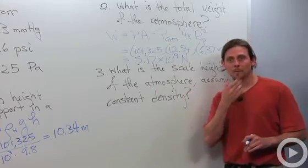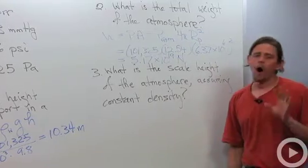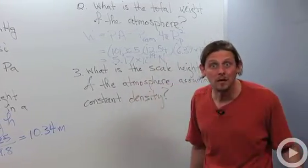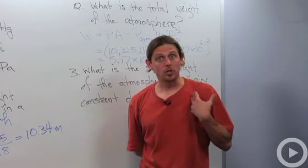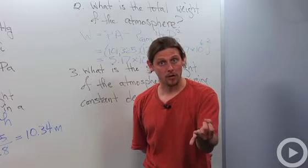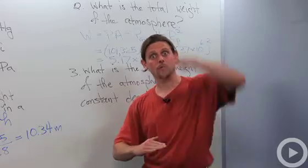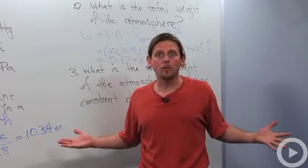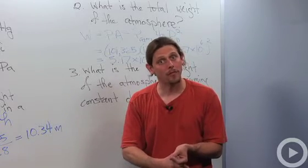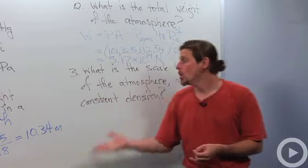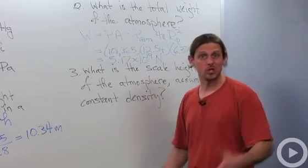All right, let's look at this last one. What is the scale height of the atmosphere assuming constant density? So this will take a minute just to kind of figure out what I mean by that. Remember over at the beginning we wanted to use density times acceleration due to gravity times height to determine the pressure at the surface of the earth of the whole atmosphere. But we said there were a couple of problems. The density wasn't constant, and we didn't know what to use for the height.